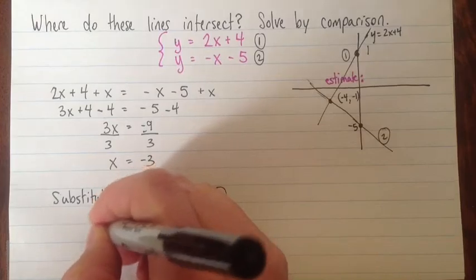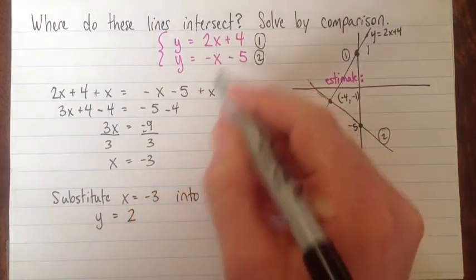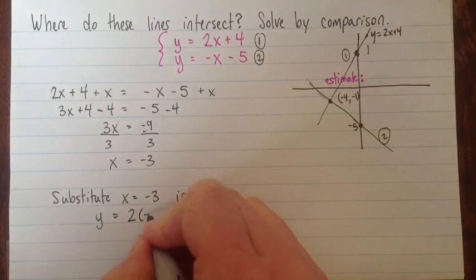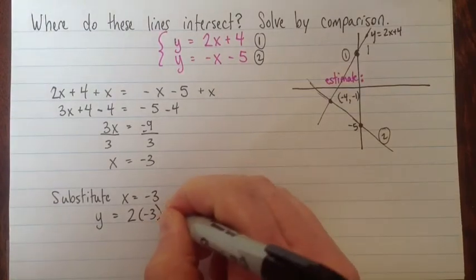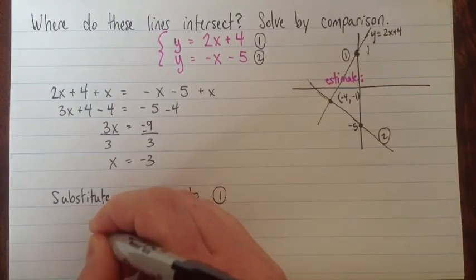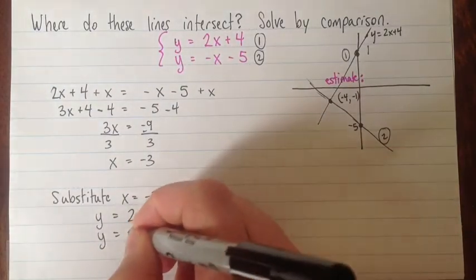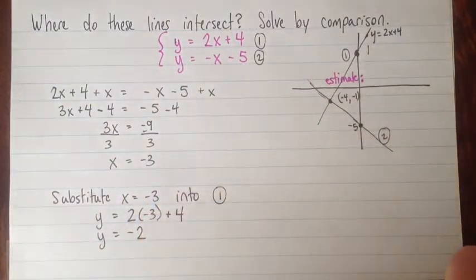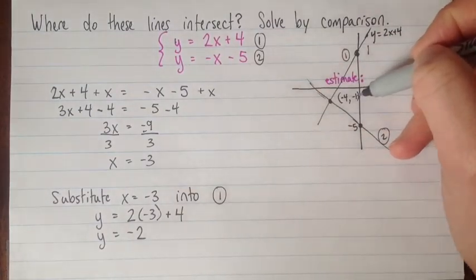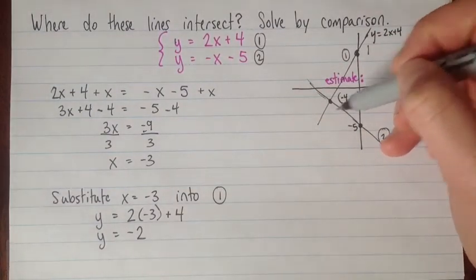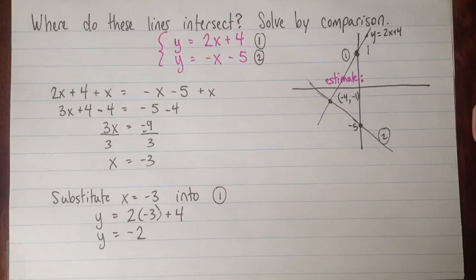So we have y equals 2x, but I'm substituting x equals negative 3 plus 4. So that gives me negative 6 plus 4 is negative 2. And if I go back to check my estimate, my estimate was maybe that y was equal to negative 1. So this is really close, so that's totally cool.